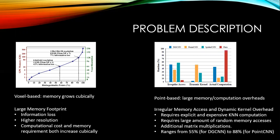For point-based method, we have to calculate the kernel of each neighbor. This will introduce additional matrix multiplication. From the figure, we find that irregular memory access and dynamic kernel computation for DGCNN is 55% and PointCNN is 88%.